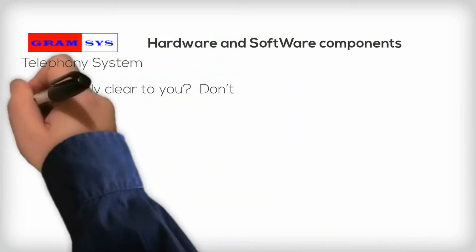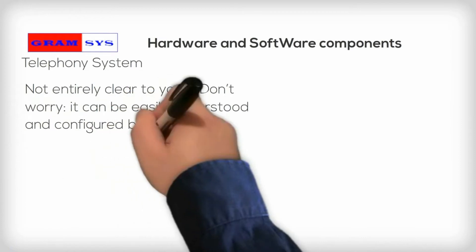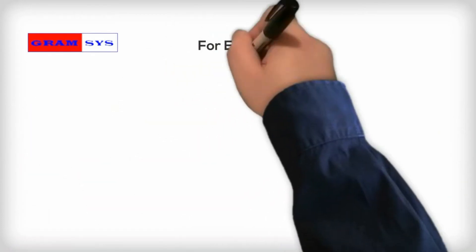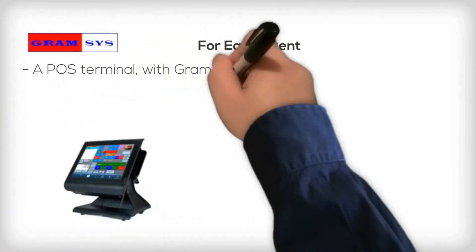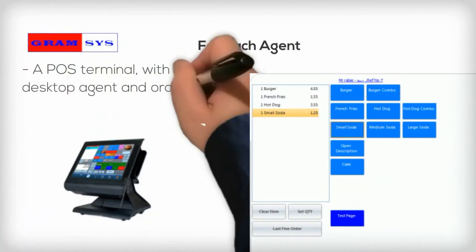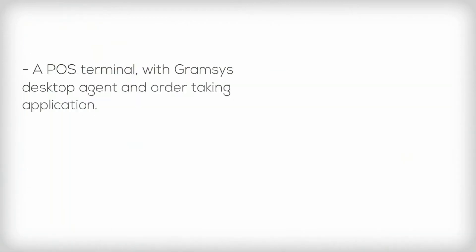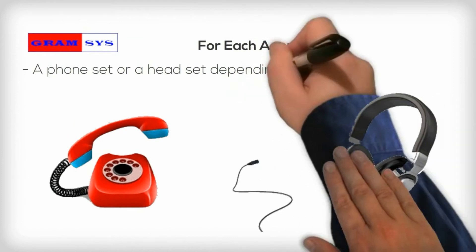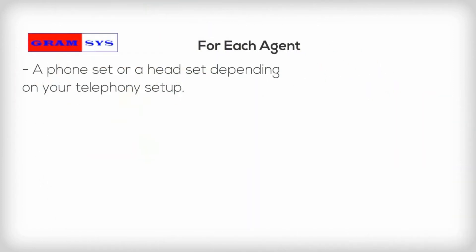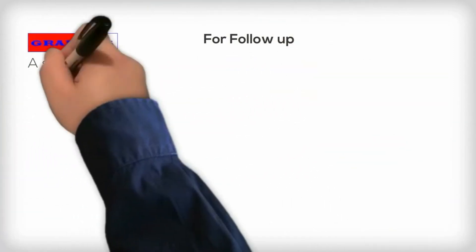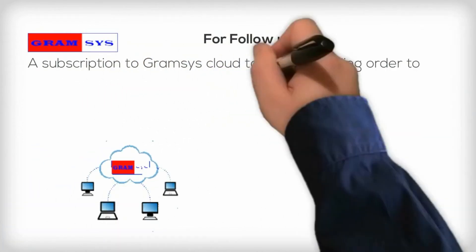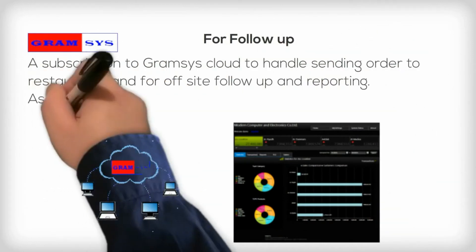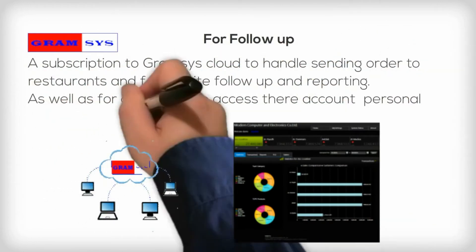Not entirely clear to you? Don't worry, it can be easily understood and configured by your Telephony System installer. For each call agent you will need a POS terminal with GramSys desktop agent and order taking application, a phone set or headset depending on your telephony setup, and a subscription to GramSys cloud to handle sending orders to restaurants, for off-site follow-up and reporting, as well as for customers to access their account and personal data.